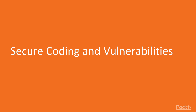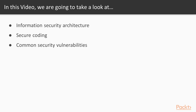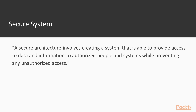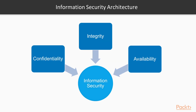In this video we're going to take a look at information security architecture, secure coding, and common security vulnerabilities. A secure architecture involves creating a system that is able to provide access to data and information to authorized people and systems while preventing any unauthorized access. Creating an architecture for information security involves confidentiality first.